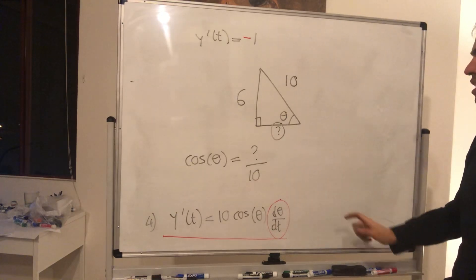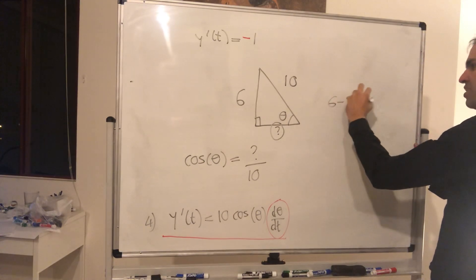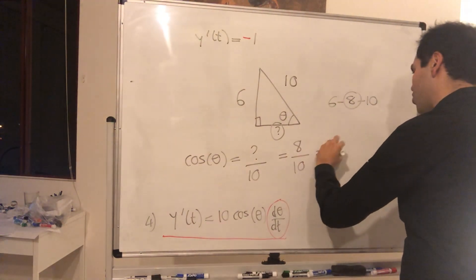or simply recognize this as a 6, 8, 10 triangle. So in particular, question mark has to be 8. And which is 4 fifths.